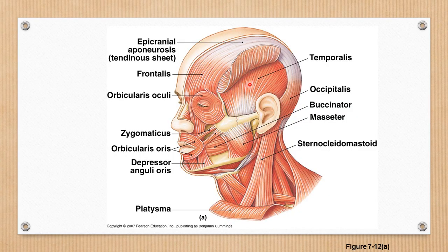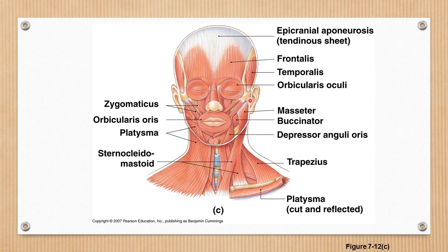Looking at examples of obliquely arranged muscles: the triangular-shaped temporalis is inserted through its tendon into the bone. The orbicularis oculi and orbicularis oris are circularly arranged muscles. The omohyoid with its superior belly and inferior belly running in different directions is a best example of a digastric muscle.